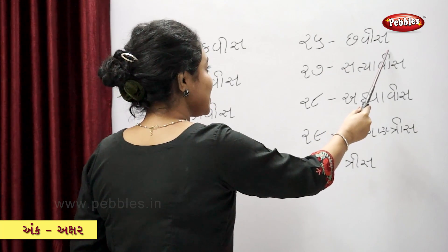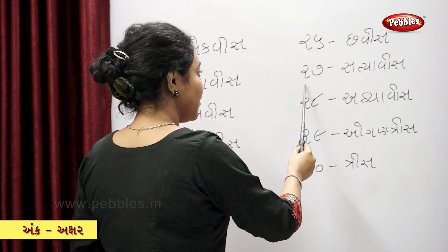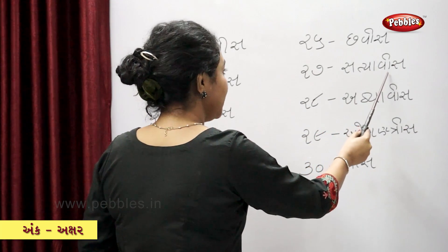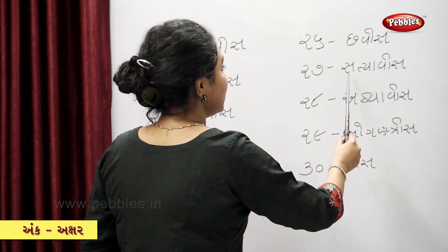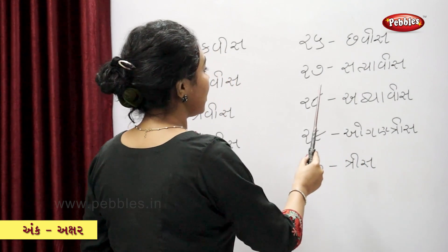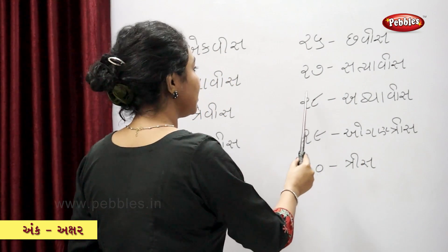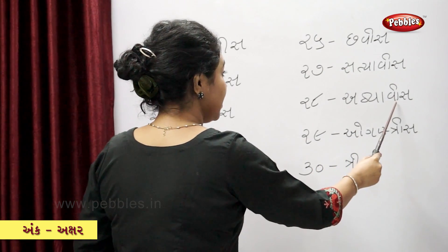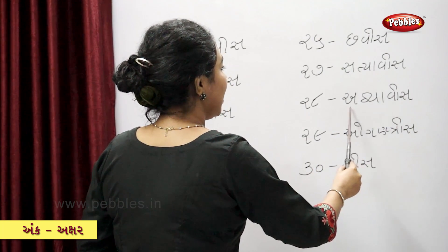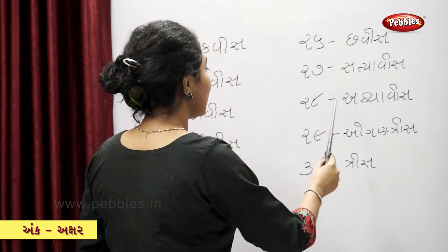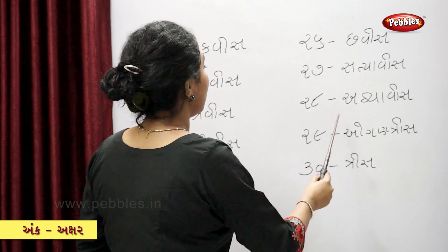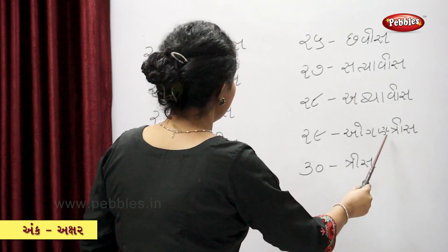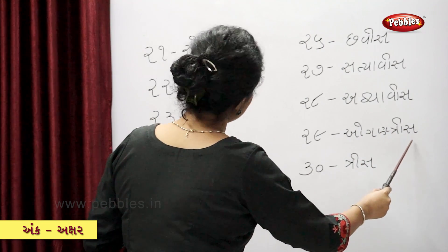Chavies, Satya-vi-sa — twenty-seven. Ahtya-vi-sa — twenty-eight. O-ga-na-tri-sa — twenty-nine.